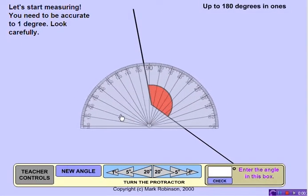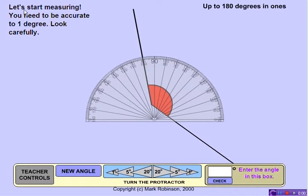Notice you'll have your protractor. The directions, let's start measuring. You need to be accurate to one degree. Look carefully. Up to 180 degrees in ones. So this is the lesson that we're on.